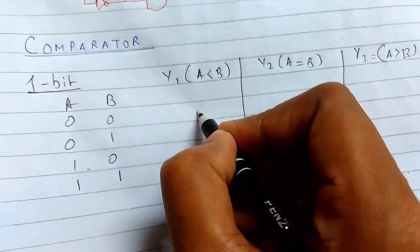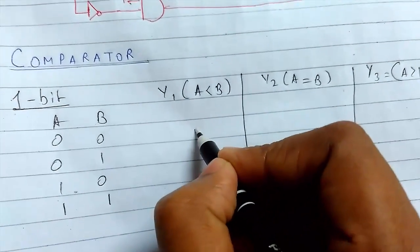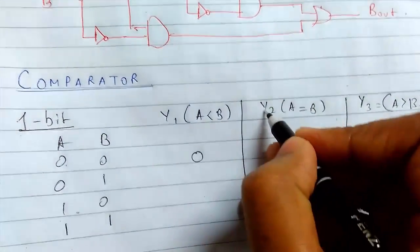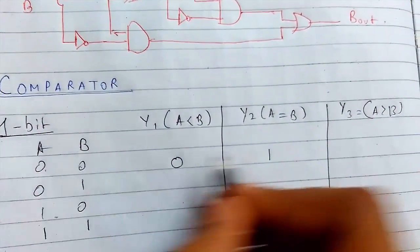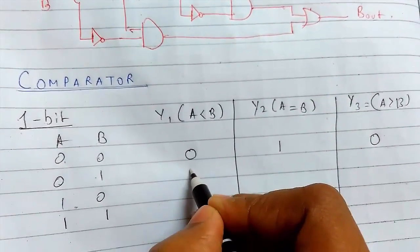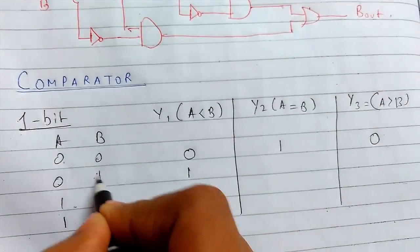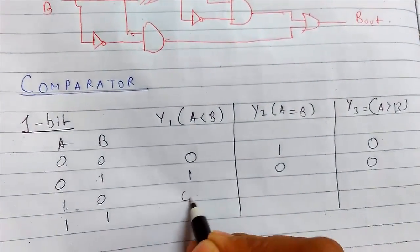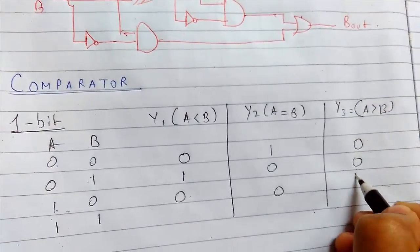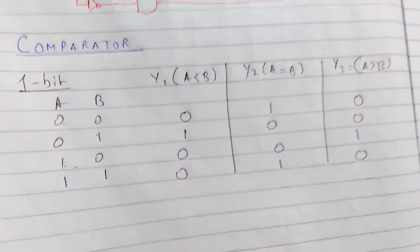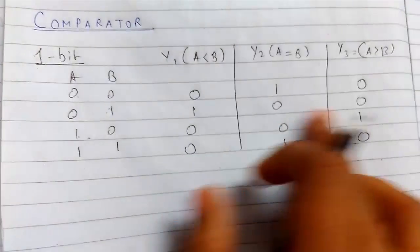For this case we can see that for 00 it is not false. For the inputs 00 we can say both the numbers are same. For 01 this will be yes true, A is less than B. This is false, this is false. For 10, this is false, this is false, yes A is greater than B. For 11 this is false, this is true, this is false.